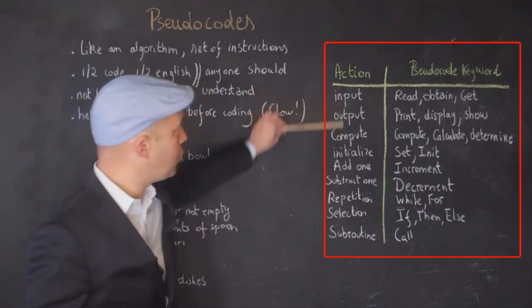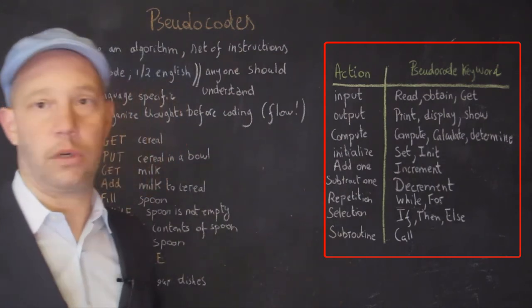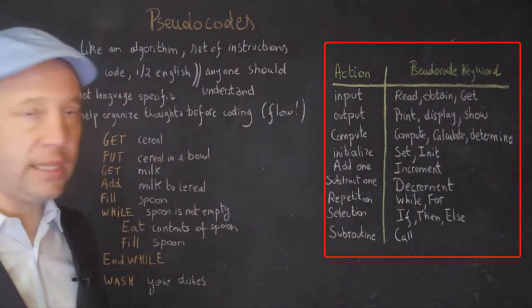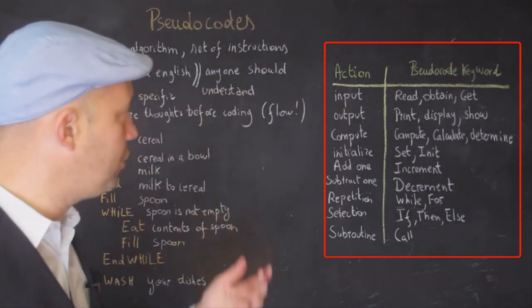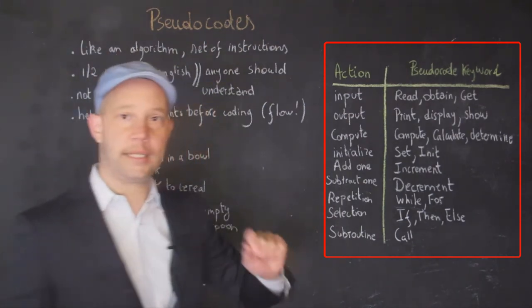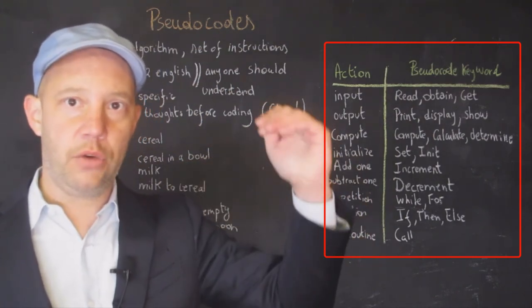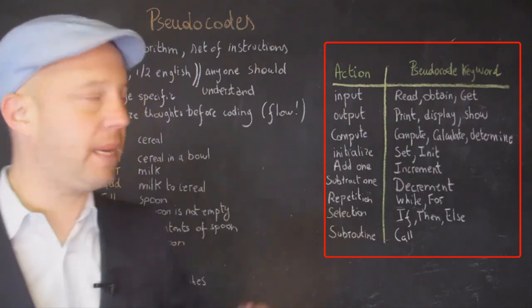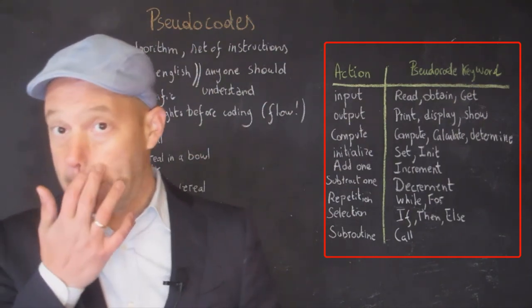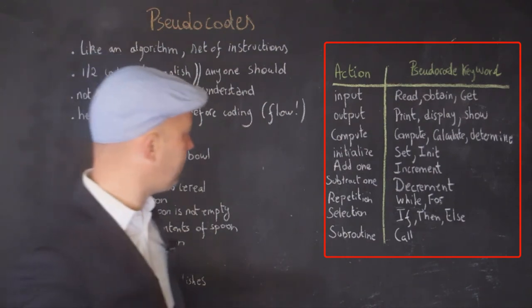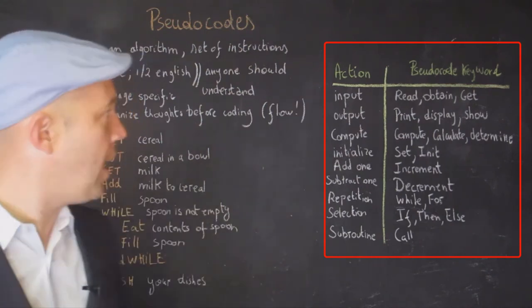So, there are a bunch of keywords for pseudocode. So, for instance, if you want to do an input, you would use a pseudocode like get or obtain. If it's an output, you would use things like print display. For the heart of your code, rather, you would use things like compute or determine. You would need to maybe initialize at the beginning. If you do a sort or search through a database, you need to initialize to the top. Then you may want to increment or you may want to decrement. If you start at the end, you may need to repeat. And so, for that, you will use keywords while or for. If you have a conditional statement or selection, you would use something like if, then, or else. And then if you need to call a function like a subroutine, then you would use a keyword call.